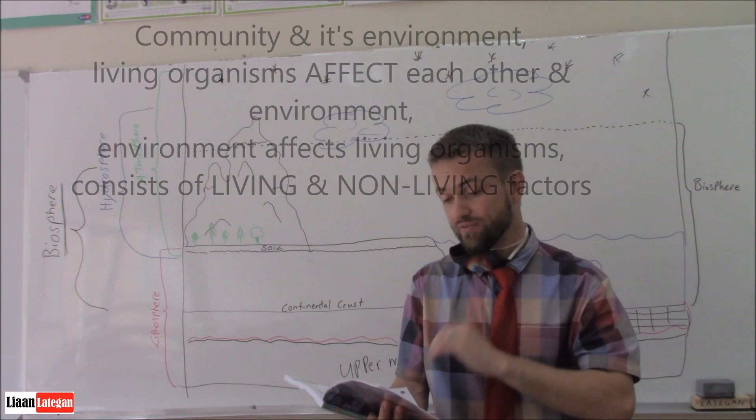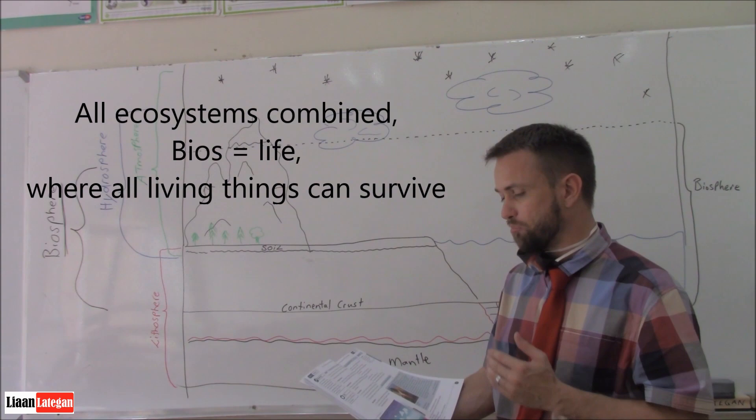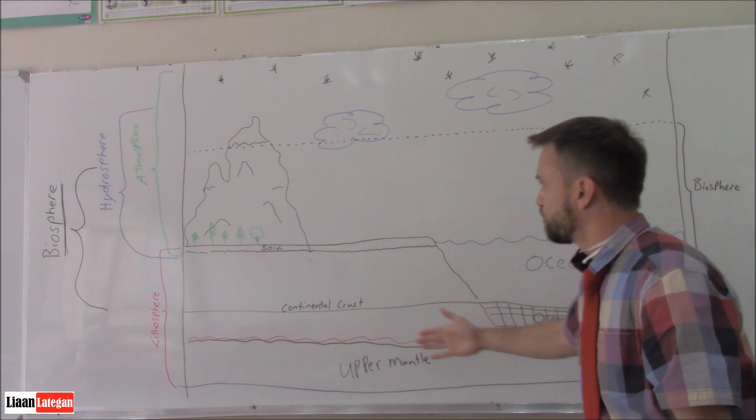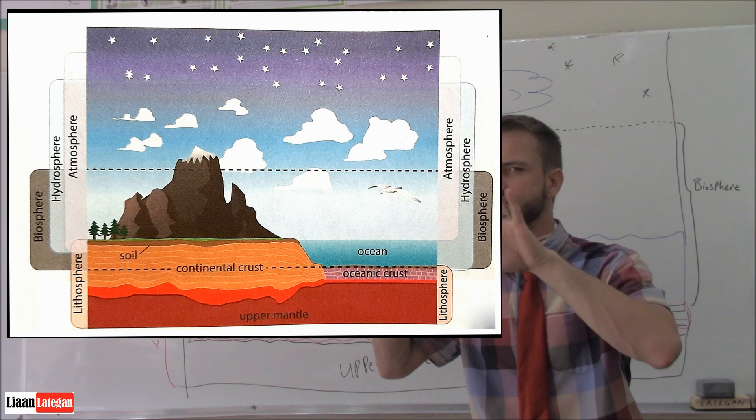And then you get the biosphere. All ecosystems combine to make up the biosphere. Bios meaning life. So the biosphere is where living things can survive. So if you look at this board over here, I'm going to quickly pop up a photo so you can have a look, just an in-depth look at it. And then I'm going to explain to you the different levels.